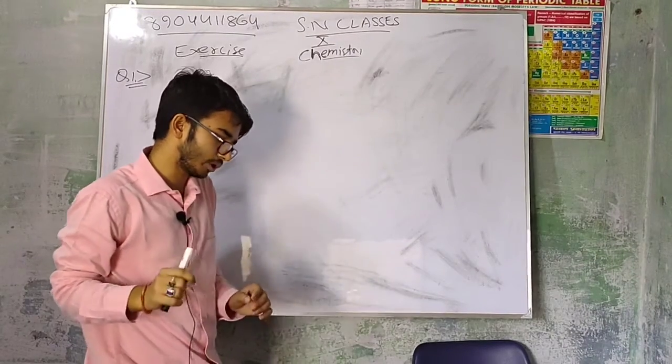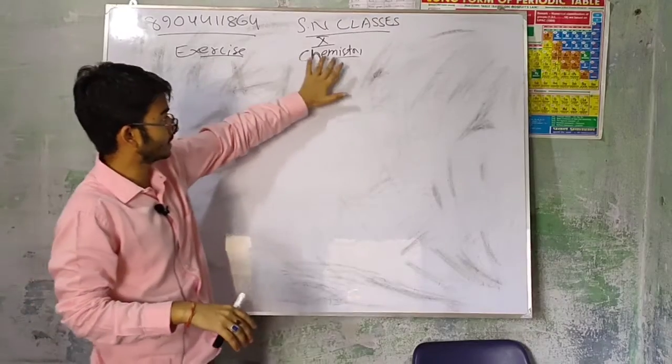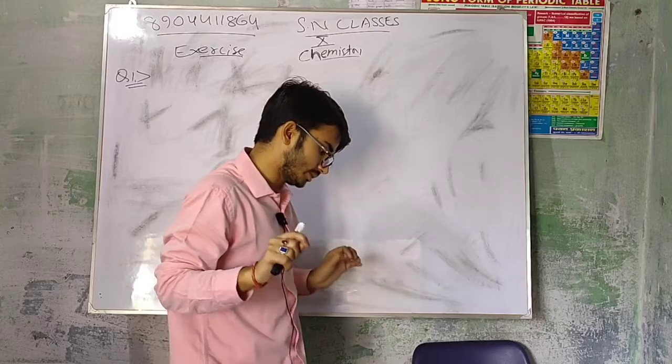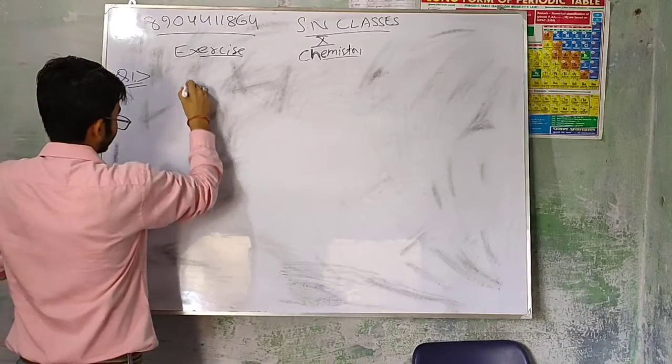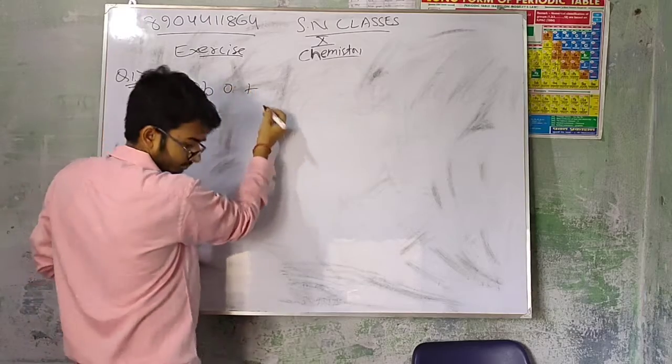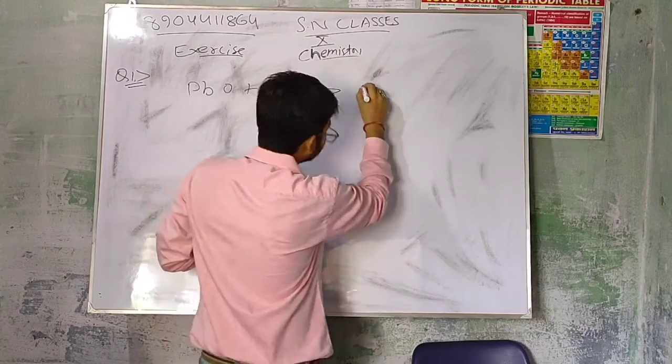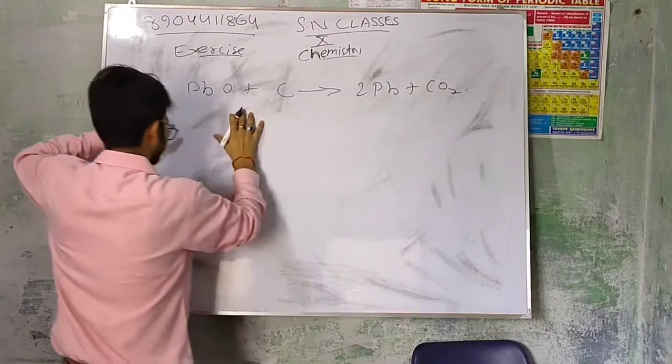Which of the statements about the reaction below is incorrect? Exercise question number one from the chemistry chapter. Which of the following statements about this reaction is incorrect: PbO plus carbon gives you 2Pb plus CO2.